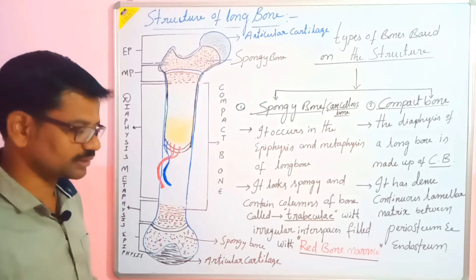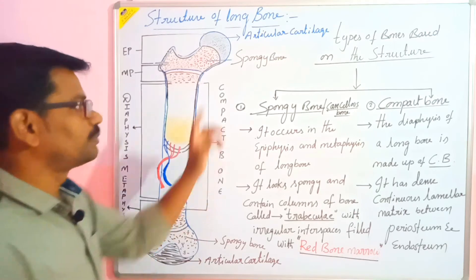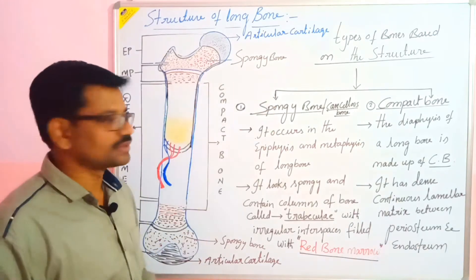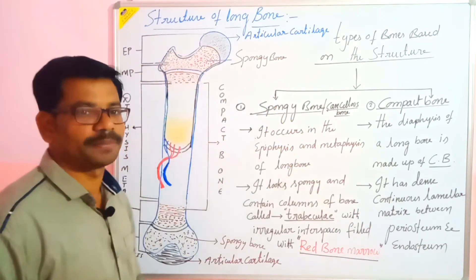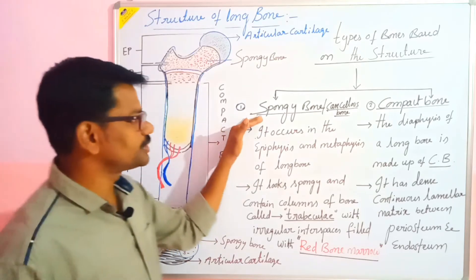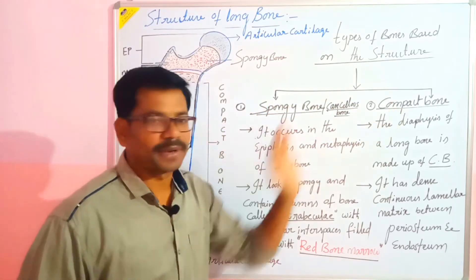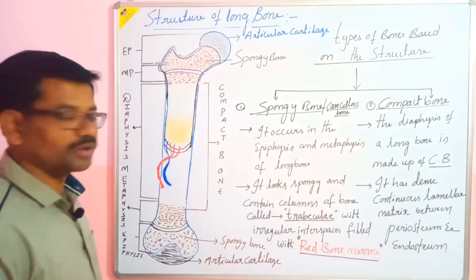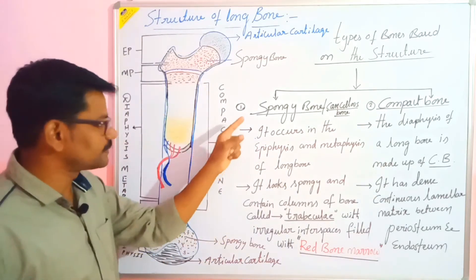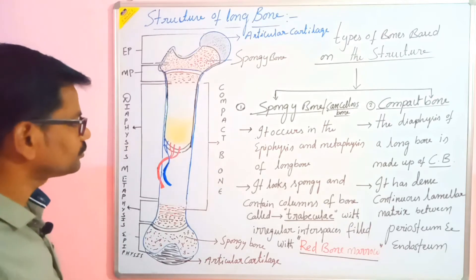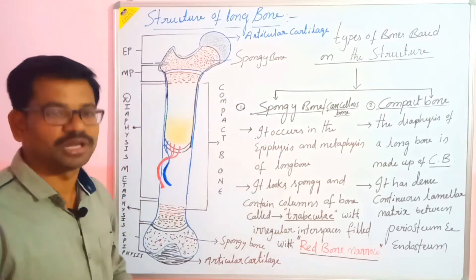Now we are going to talk about the types of bones on the basis of structure. On the basis of structure, bone is divided into two types: one is spongy bone and the second is compact bone. The first type is the spongy bone. Spongy bone is also known as cancellous bone or trabecular bone.